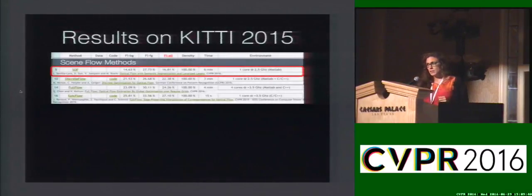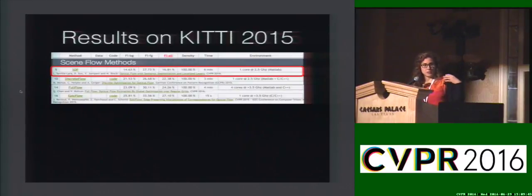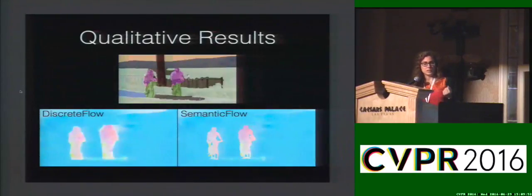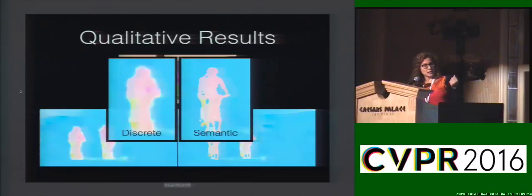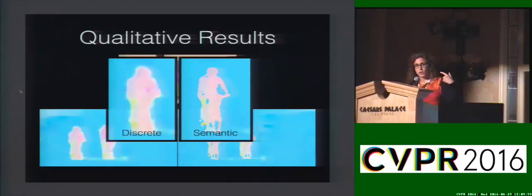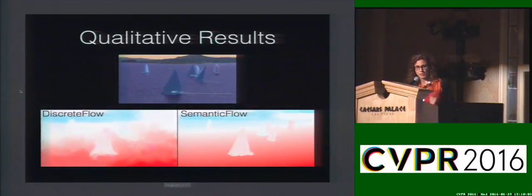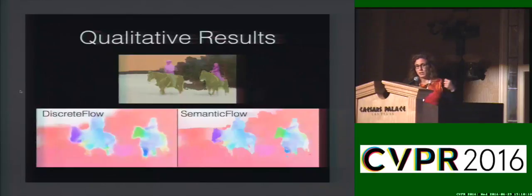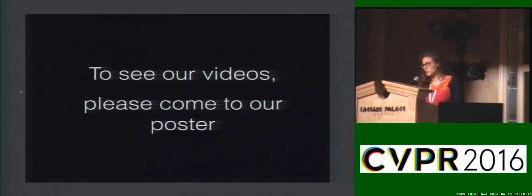We show experiments on KITTI 2015, where we obtain the top performing numbers of all monocular methods. We also show results on YouTube videos, and the improvement in performance is particularly noticeable at object boundaries and in thin structures. Here are some more examples, and we have put code and data online. If you would like to hear more, please come to our poster this afternoon. Thanks.